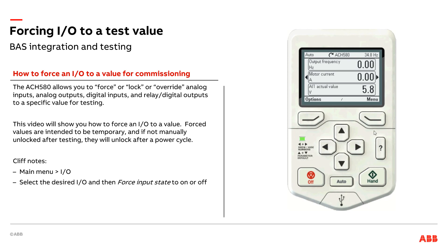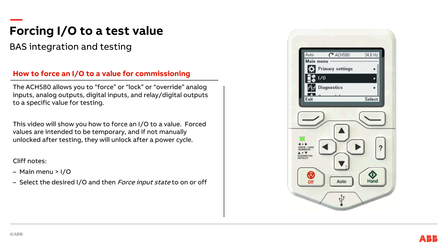On the screen on the right, I'm going to click on Menu, come down to IO, hit the right button, and now I'll be able to see the IO. I'm going to start with my digital inputs on top. As I scroll down, I'll see analog ins, analog outs, relay outputs — all my IO. When you see a zero here, that's the current value. So digital inputs 1, 2, 3, and 5 are all open right now, and digital input 4 is closed — that's my safety.